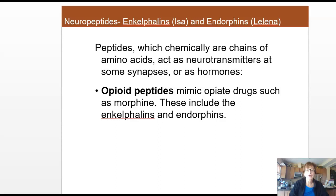Now we're going to venture into neuropeptides. There are quite a few of them on our list of presentations. We'll start with Issa's and Lelaina's presentation of enkephalins and endorphins. Remember that peptides are a fairly short string of amino acids bound together by peptide bonds, and they can act in the central nervous system as neurotransmitters. We'll start with the opioids, which are called opioids because they mimic what opioid drugs like morphine do — so they're painkillers.